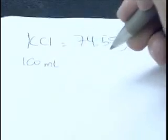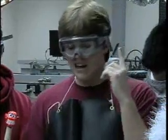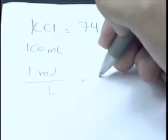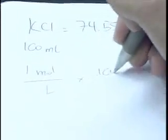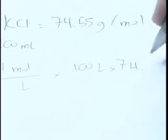Now I just need to get this many grams and weigh it. But there's only a 100 milliliter volumetric flask available. Right! I need to multiply the actual mass I need for one liter by 0.1 to get the mass I need for 100 milliliters.